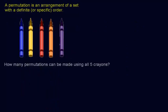Alright, so here's our first question. How many permutations can be made using all five crayons? Now in the previous video, we know how to do this using the task method. Since we're picking all five crayons, we're just putting them in different orders. We have five tasks: the first crayon, the second crayon, the third, the fourth, and then the fifth.